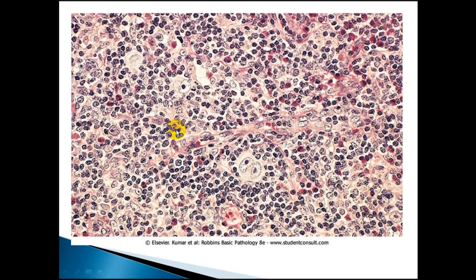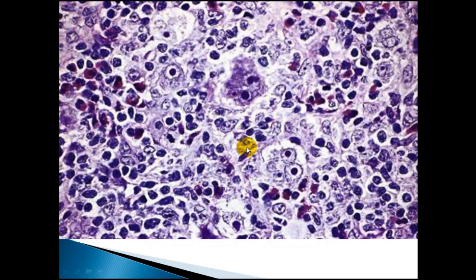This histological sample shows the mixed cellularity type: histiocytes, classic RS cells with owl-eye appearance, different lymphocyte infiltration, and some plasma cells within the sample. Another picture shows the classic RS cells, plasma cells, histiocytes, and a large number of small lymphocytes.